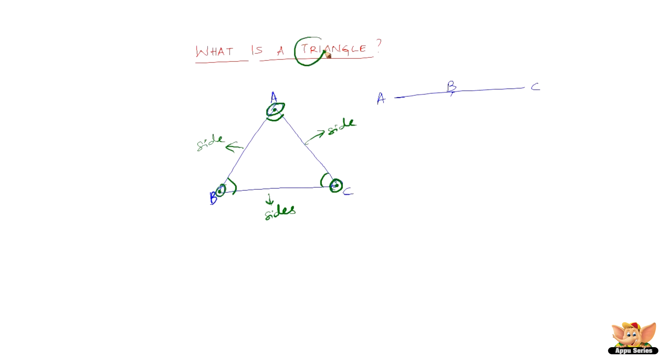The word triangle - tri means three - so triangle always has three angles, three sides, and three vertices.